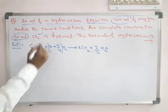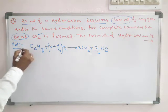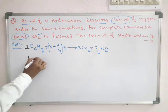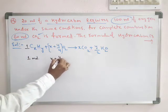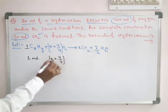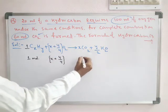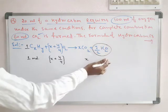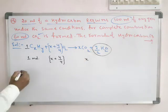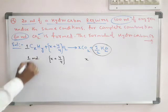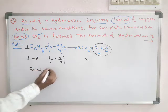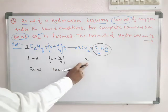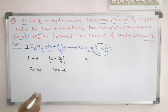Now go to the problem. It is given 20 millilitres of hydrocarbon. From the general equation, one mole of hydrocarbon requires (x + y/4) moles of O₂ and produces x moles of CO₂. Here, 20 mL of hydrocarbon uses 100 mL of O₂ and produces 60 mL of CO₂. There is no information about H₂O, so we are not using it.